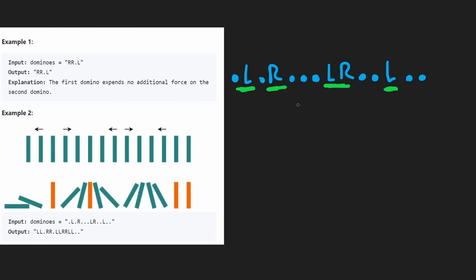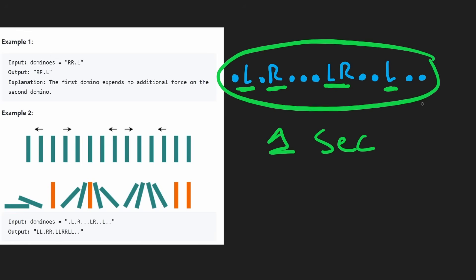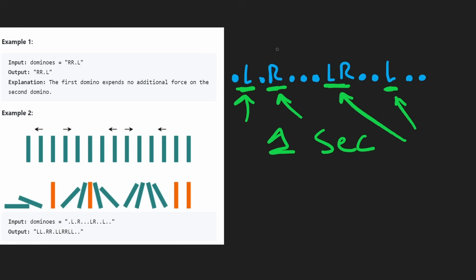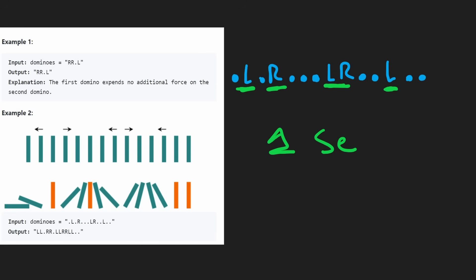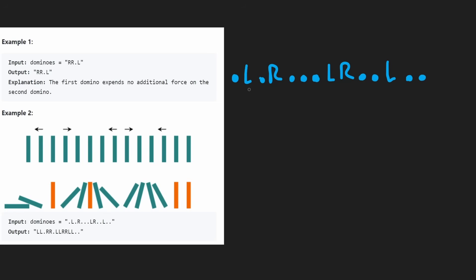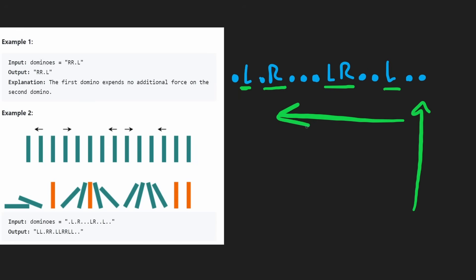There are multiple solutions to this problem. One approach — actually the simplest — is a simulation using a queue. The ones that are standing straight up won't knock each other over; only the L or R dominoes can knock others over. So we process those using a queue, simulating second by second. We should process them in order — left to right or right to left — and you'll see why shortly.